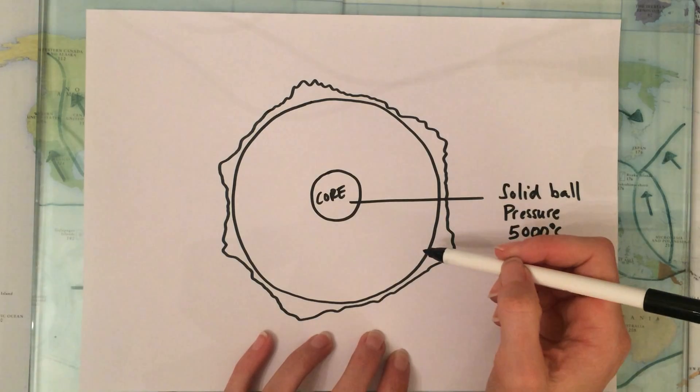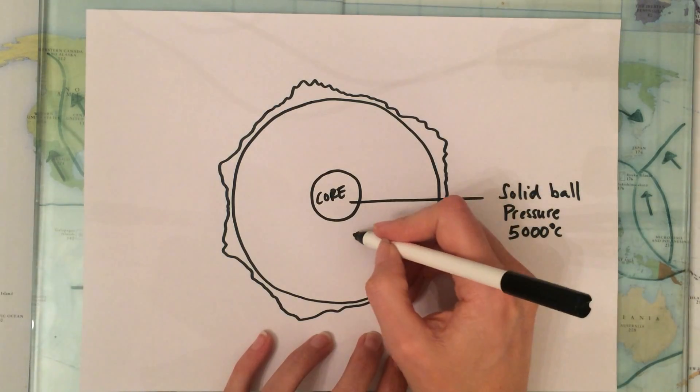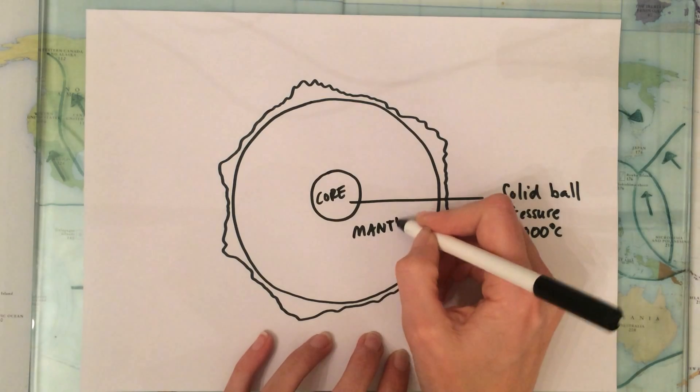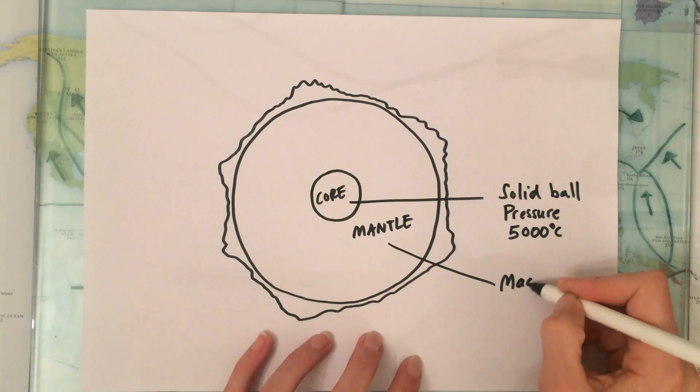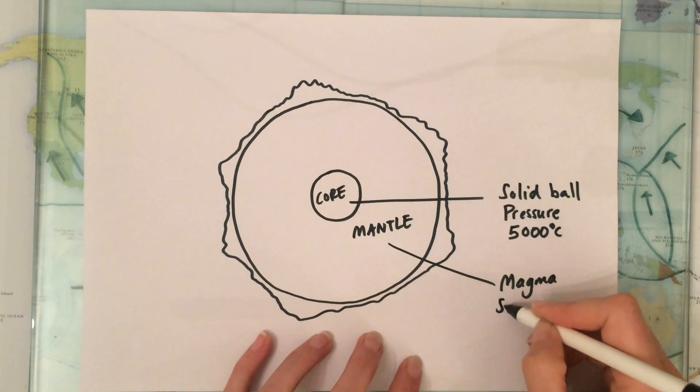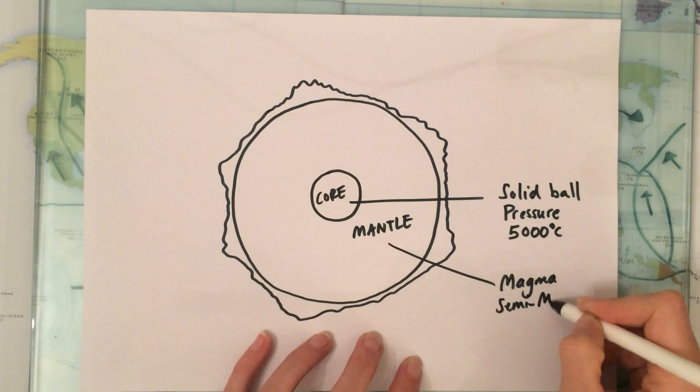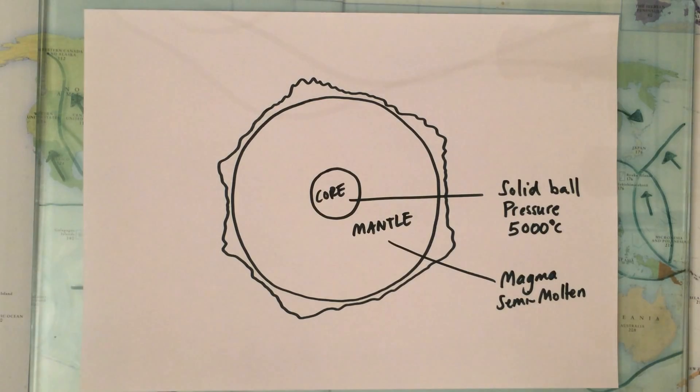Moving out from the core we get to the egg white, and that is called the mantle. The mantle is where you find magma which is semi-molten, that means it's part liquid part solid. It's liquid rock in other words.